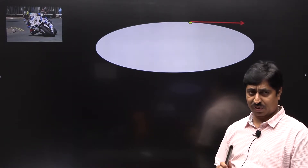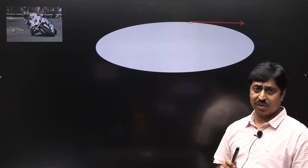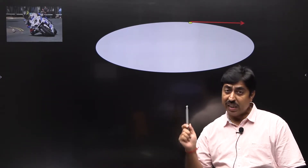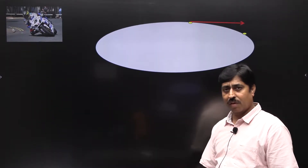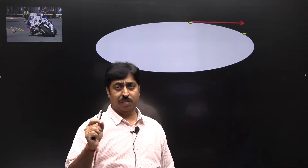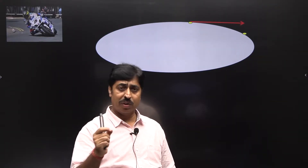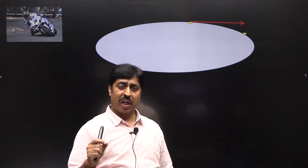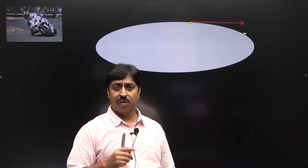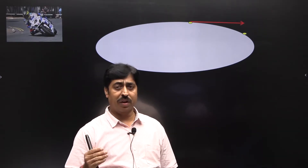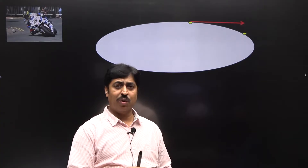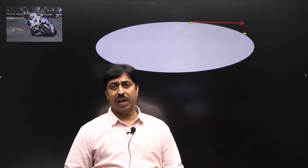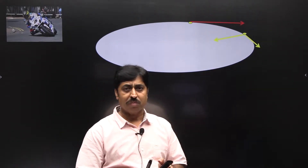Initially v squared by r is 0, so there is no radial acceleration. You will have maximum tangential acceleration right now, meaning your rate of change of speed is going to be maximum initially. A bit later, when you reach some speed, in order to move in a circular path there must be some radial force and radial acceleration. So now the complete friction cannot be used to accelerate you — part of the friction force will be directed towards the center of the circle and part of it will be tangential to accelerate you.